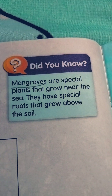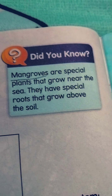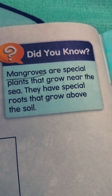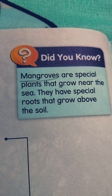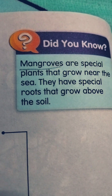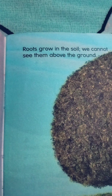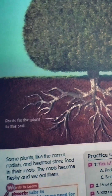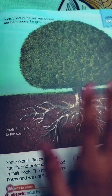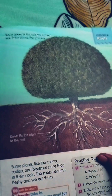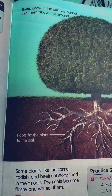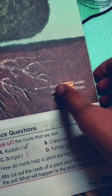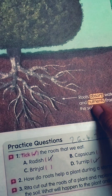Did you know? Mangroves are special plants that grow near the sea. They have special roots that grow above the soil. Roots grow in the soil — we cannot normally see them, but mangrove roots grow above the ground. Roots fix the plant to the soil. Roots absorb water and nutrients from the soil.